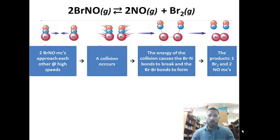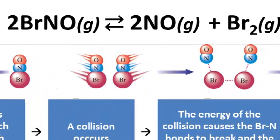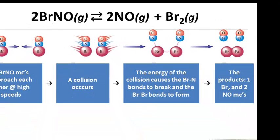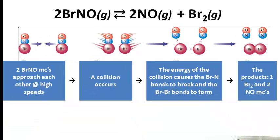First, what we're going to do is look at this reaction. It's two BrNO, bromine, nitrogen, and oxygen together as one compound. And it decomposes and produces two nitrogen monoxides and one bromine molecule. How does that work? Well, we've got the four-step process here. So first, you have the NOBR. Two of them approach each other at a high speed.